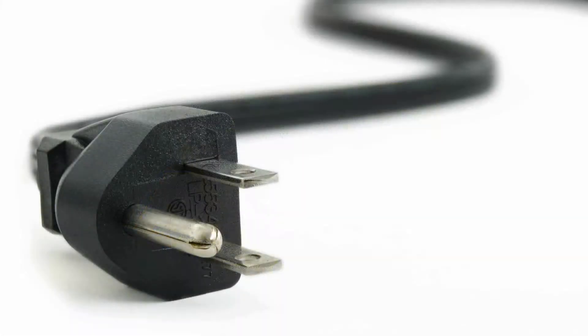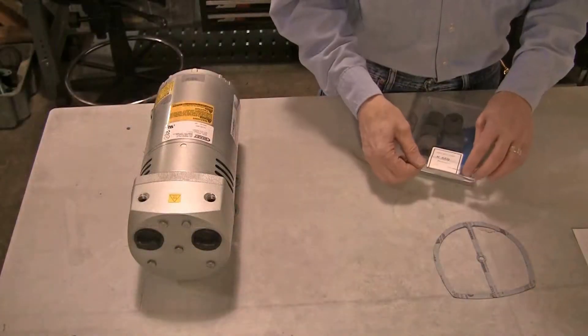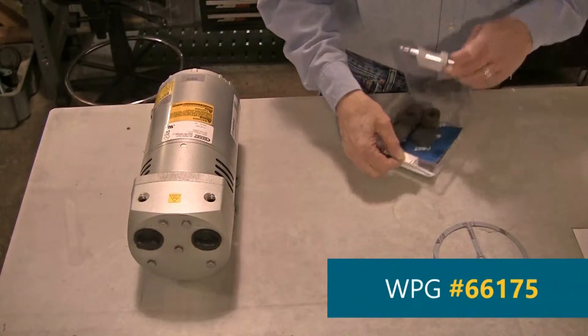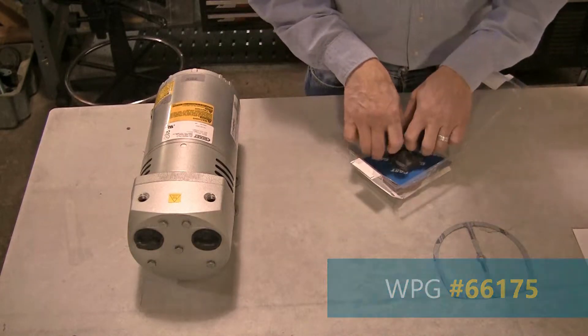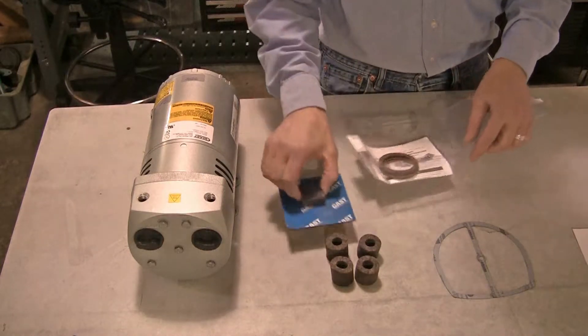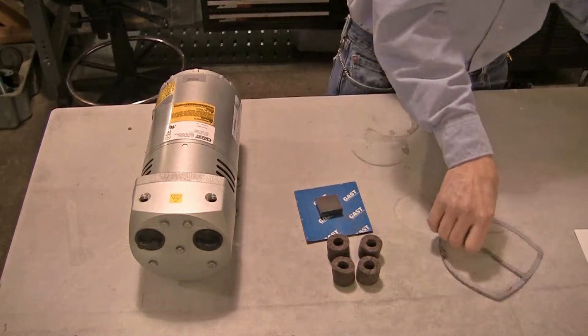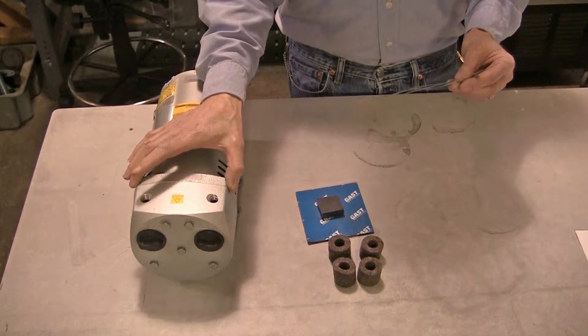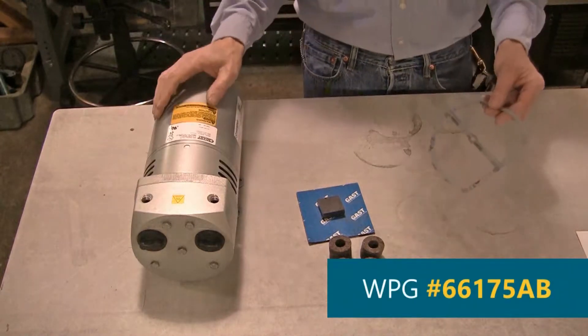Always disconnect all power from the lifter and vacuum pump before servicing. The service kit, WPG No. 66175, contains 4 carbon vanes and 2 replacement filters. Additionally, if the gasket needs replacing, you will also need WPG Part No. 66175AB, the replacement gasket.